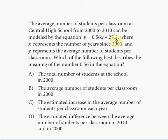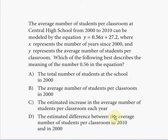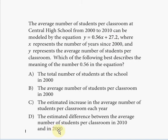Choice C says the estimated increase in the average number of students per classroom each year — that looks very promising, because we estimated that each year 0.56 students are added to the average relative to the previous year. Now let's check choice D: the estimated difference between the average number of students per classroom in 2010 and in 2000. That would require x = 10, giving 5.6 + 27.2, then subtracting 27.2, which equals 5.6 — not 0.56. That doesn't match.